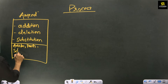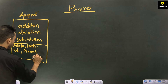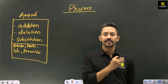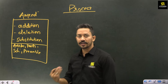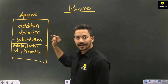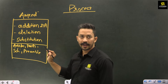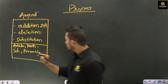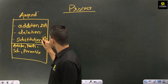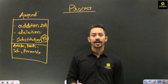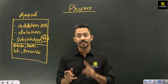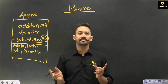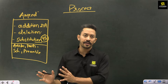Any changes in any part, article, schedule, or preamble of the Indian constitution — whether you add something like Article 21A added as a fundamental right, delete something like the fundamental right to property being removed, or substitute something like Article 45 being substituted through the 86th Constitutional Amendment Act — all these things combined together will be considered as amendment of the Indian constitution.